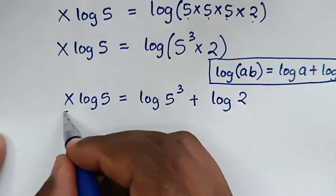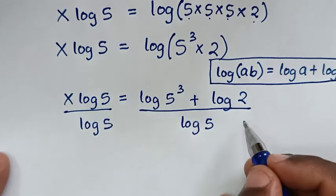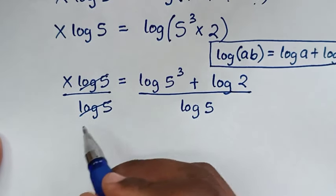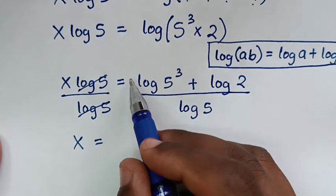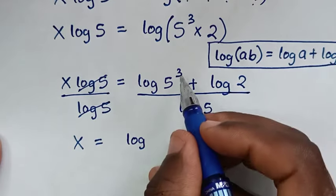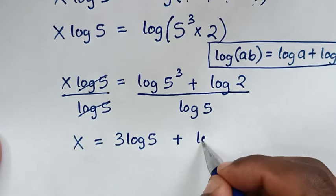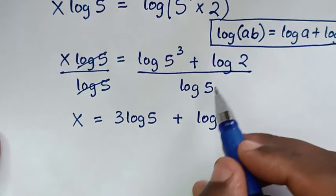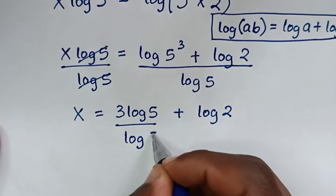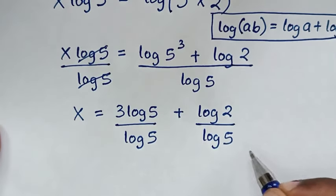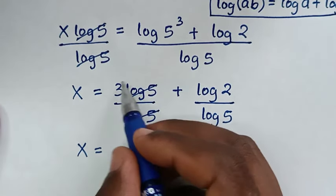In the next step we will divide by log of 5 on both sides. This log of 5 cancels with this log of 5. Then log of 5 power of 3 — this power of 3 moves to the front — gives 3 times log of 5. Dividing that by log of 5 gives 3.